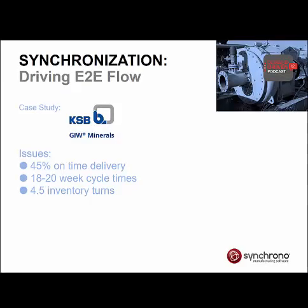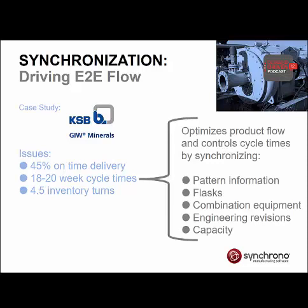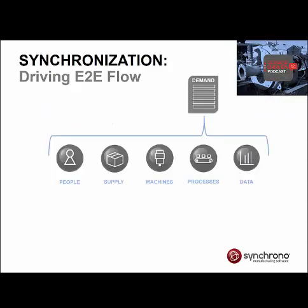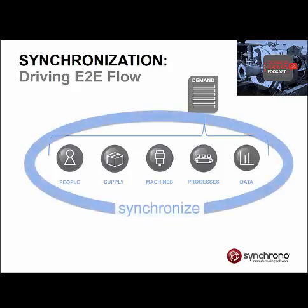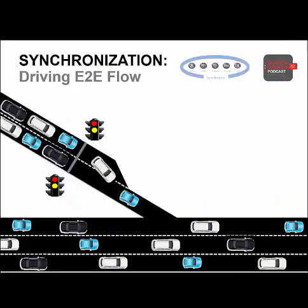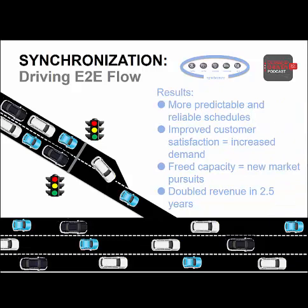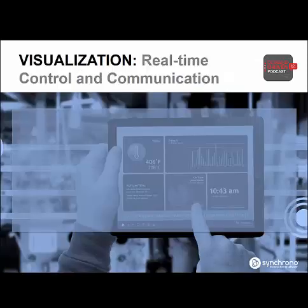GIW Minerals, a KSB company, transitioned to demand-driven manufacturing to manage these issues. Today, they've optimized their production flow and have a better handle on cycle times through synchronization. When they receive an order, their scheduling system — Sync Manufacturing Software — reviews the requirements and synchronizes all the necessary resources to complete the order based on the customer's delivery requirements. Once all the elements to complete the order are in sight, the order is deemed ready for production, then released into production based on the optimal rate of flow. Think of it like a metered on-ramp: cars are released onto the freeway at a rate that reduces congestion and keeps traffic flowing.